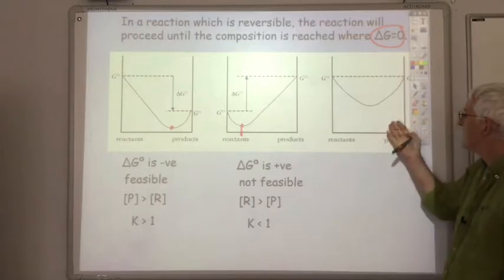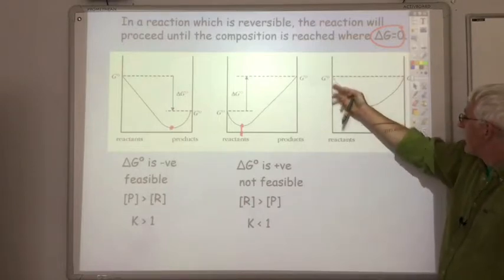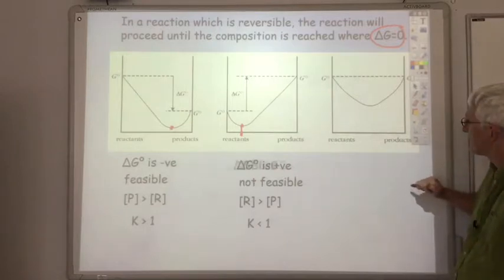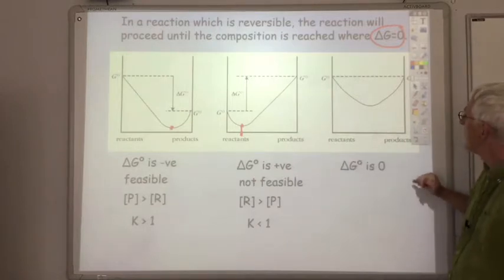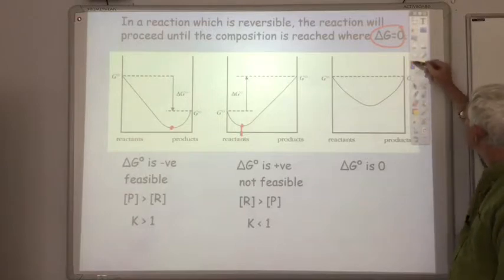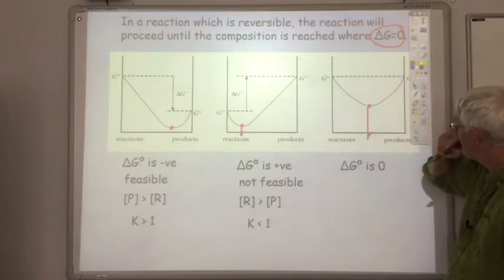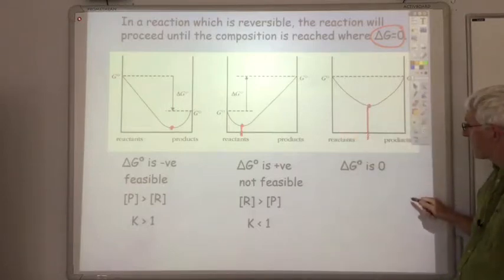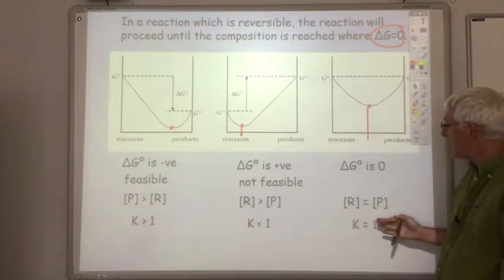Just for completeness, we include the situation where the reactants and the products have the exact same free energy. So delta G-naught is zero, and the reaction will proceed until we get to an exactly 50-50 mixture of reactants and products. The concentration of reactants equals the concentration of products, and the value of K would be one.